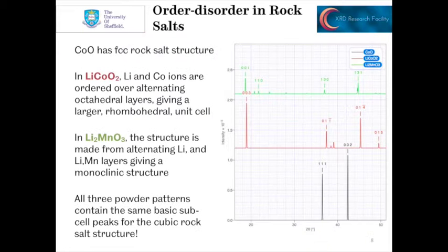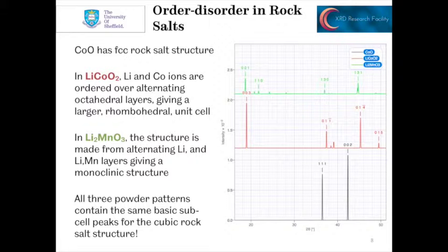Another example we can look at is the role of this in order-disorder transitions, as exhibited by cobalt oxide, lithium cobalt oxide, and lithium manganate phases. Cobalt oxide has a simple, basic face-centred cubic rock salt structure. You can see the diffraction pattern for that in black — we only see two peaks, a very simple pattern because it's cubic.